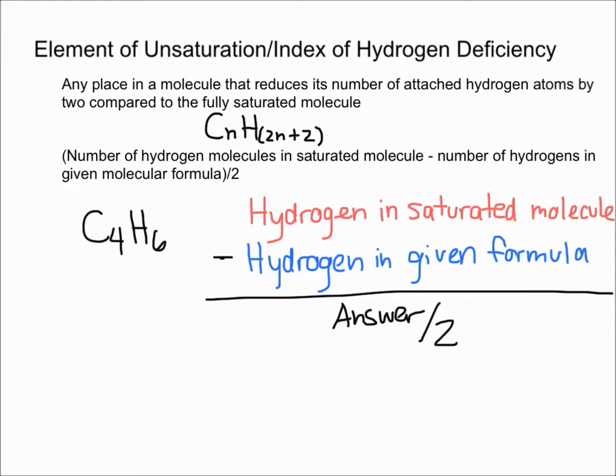First, we're going to find the number of hydrogen molecules in the saturated molecule with the given carbon, so we have four carbons. We're going to use this formula to find out how many hydrogens the saturated molecule will hold.